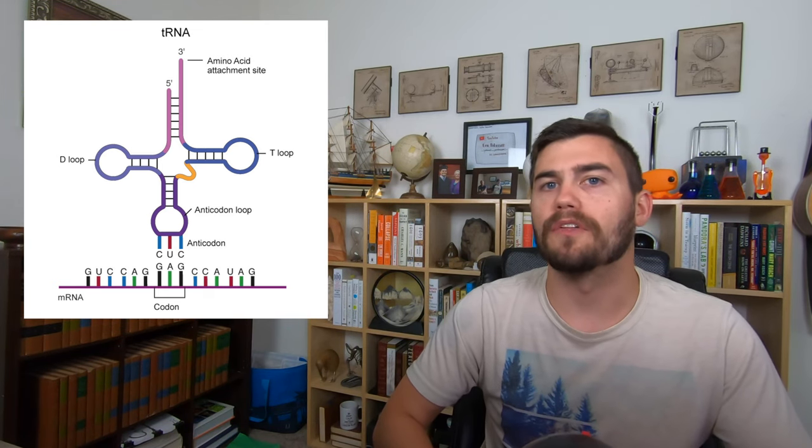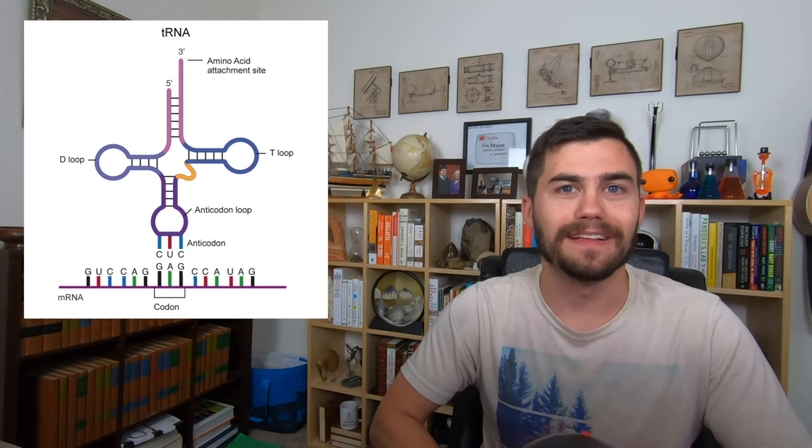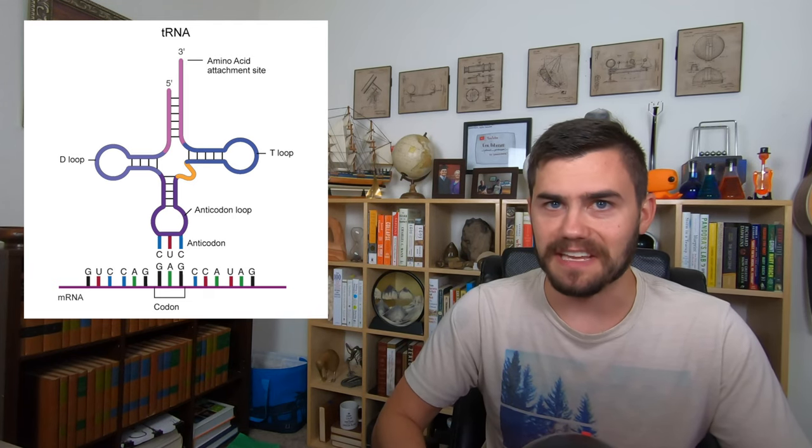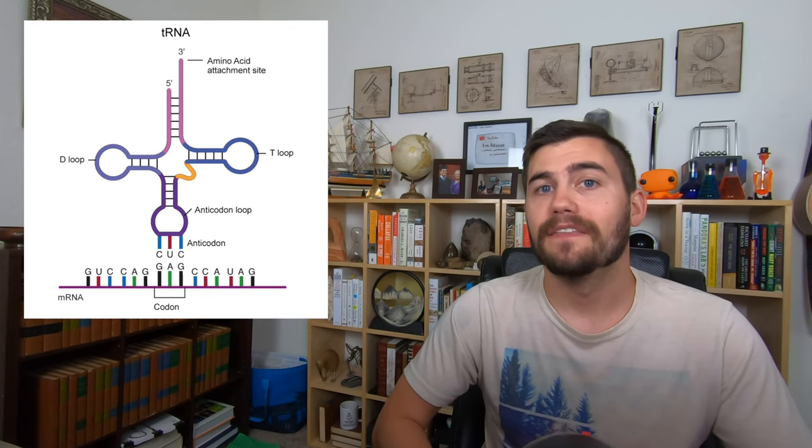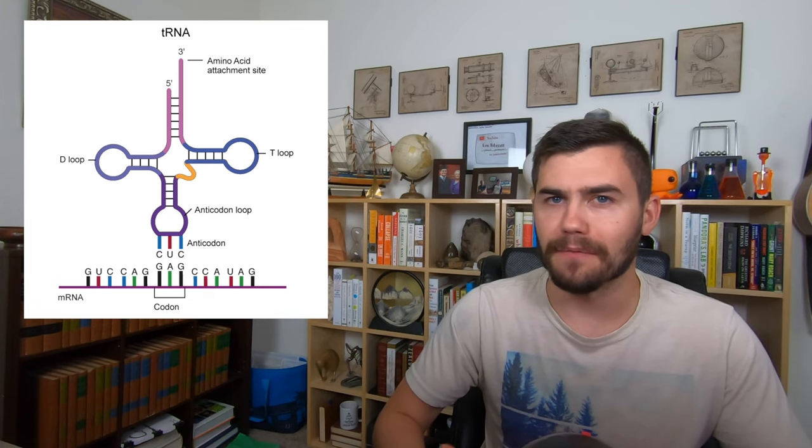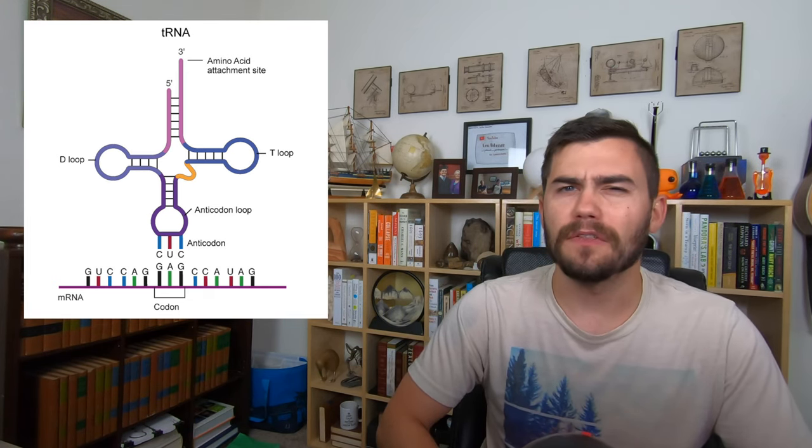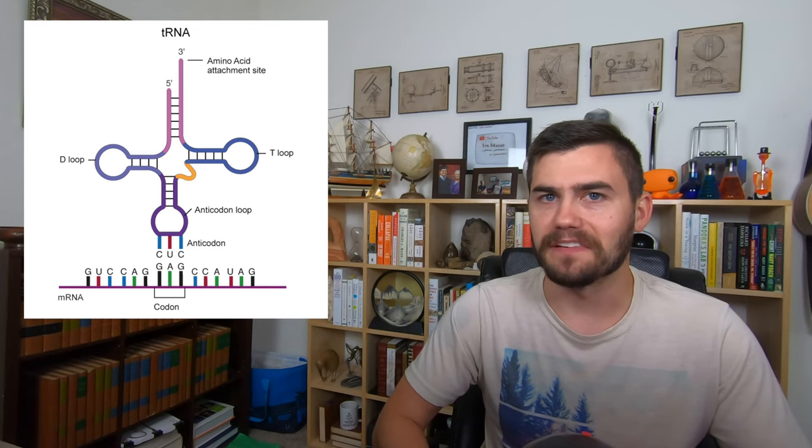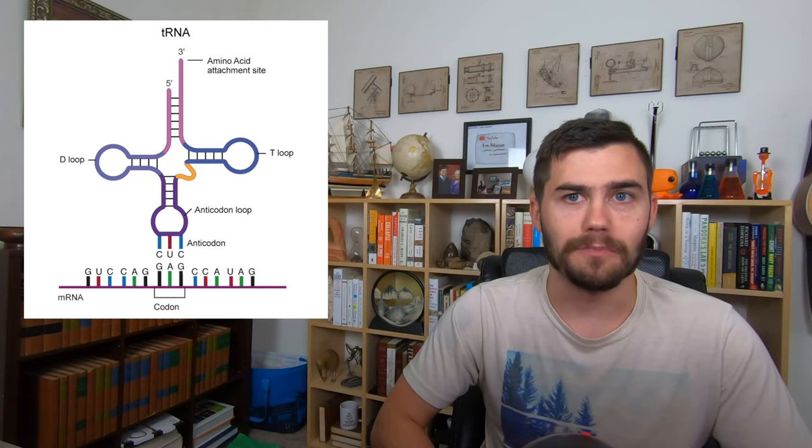On what I'm going to call the top of the tRNA molecule is the acceptor stem, where it carries a single amino acid. Then there are these four loops all around the tRNA molecule. The only one that is important for our purposes is the anticodon loop.